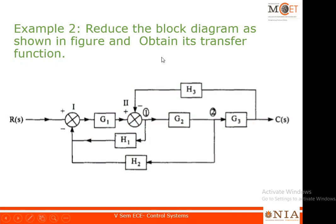Here is the first example. For convenience, I am going to represent this point as branching point one and this point as branching point two. This summer is given the name one and this summer is given the name two, so that it will be easy for me to explain while pushing a summer to the left or right. Here is the output C(s) and here is the input R(s).